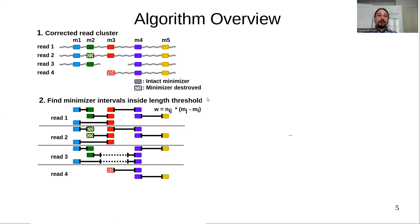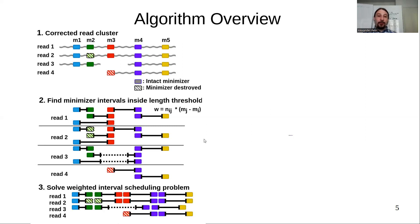The next step is to find minimizer intervals inside a length threshold. The idea is that we take two minimizers as anchors, and if they are not too far apart or too close together, we assign them to an interval. We then calculate a weight, which is the number of occurrences of each interval in the whole dataset times the length of the interval. With that, we formulate a weighted interval scheduling problem that we solve to find a set of intervals for each read that covers the read best.